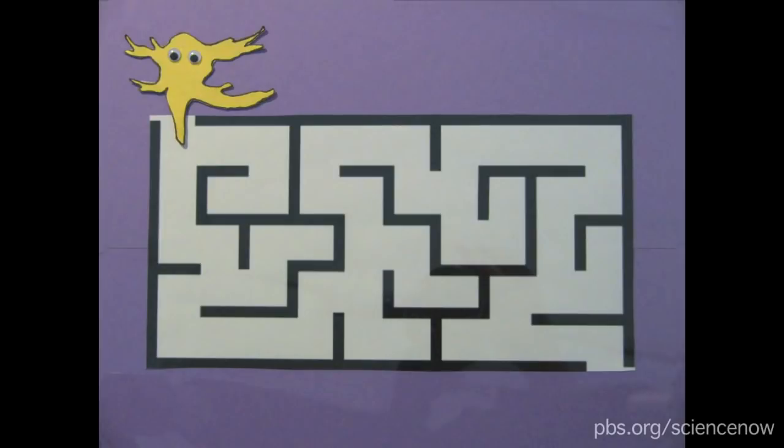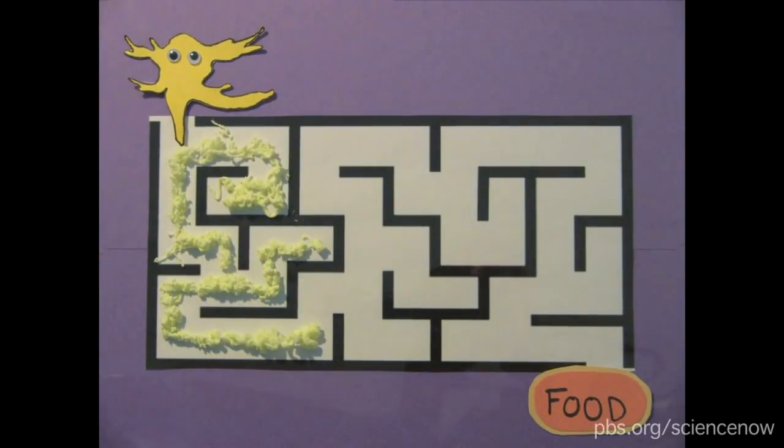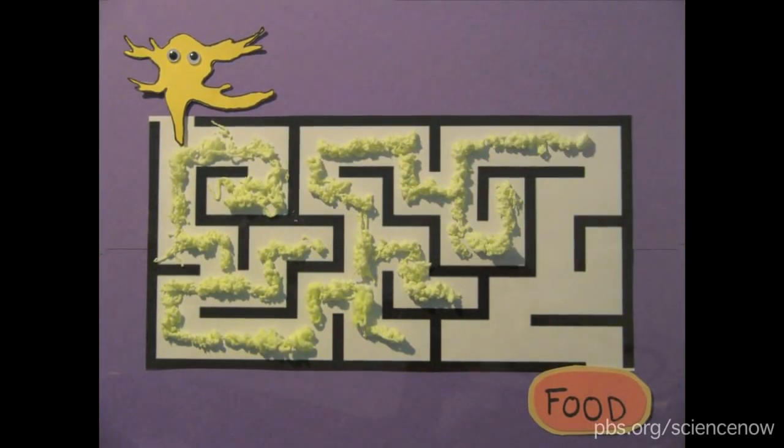For example, slime molds can find the shortest route through a maze toward a piece of food. First, the slime mold extends its tendrils through every corridor, essentially mapping the entire maze.